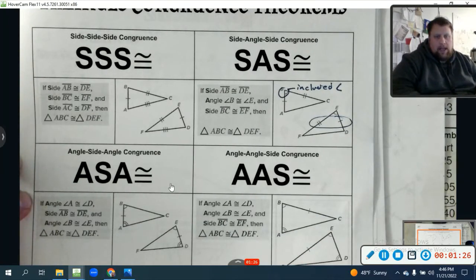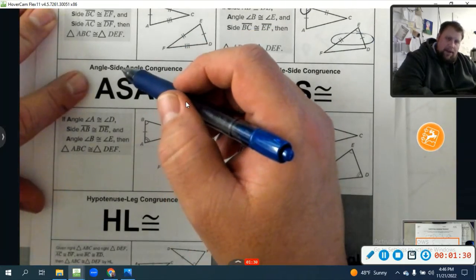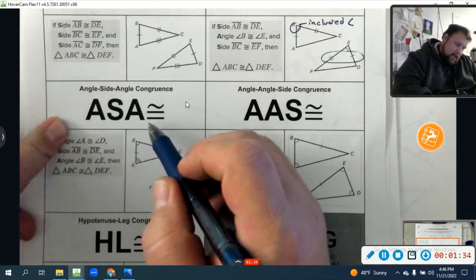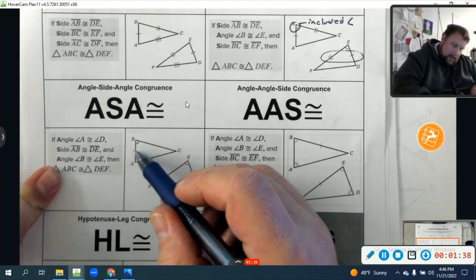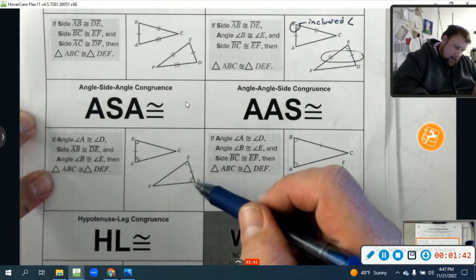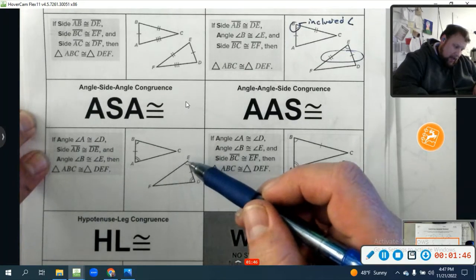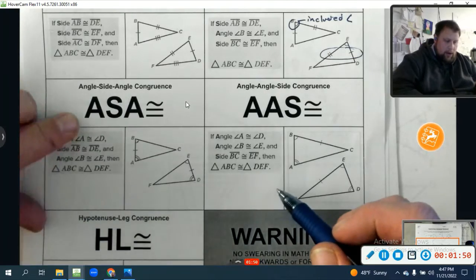Now, let's talk about angle, side, angle. Similar, except we have to have that side be the included side. So for angle, side, angle to work, it has to be that side in between. So if angle A is congruent to angle D, and AB is congruent to DE, and we have that angle B is congruent to angle E, then those triangles are congruent by angle side angle.